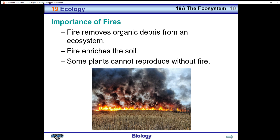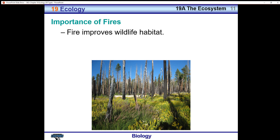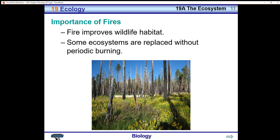Some plants actually can't reproduce without fire. Some seeds are very tough and need to be weakened by fire so that the new plant can sprout. Fire also improves wildlife habitat. Some ecosystems are replaced without periodic burning, and periodic burning — as you can see in this photo — the trees that were burned have allowed lush green plants on the forest floor to be able to sprout and thrive.